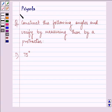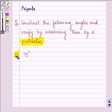Hello and how are you all today? My name is Priyanka. The question to be discussed is: construct the following angles and verify by measuring them by a protractor. So the angle that we need to draw is 75 degrees.